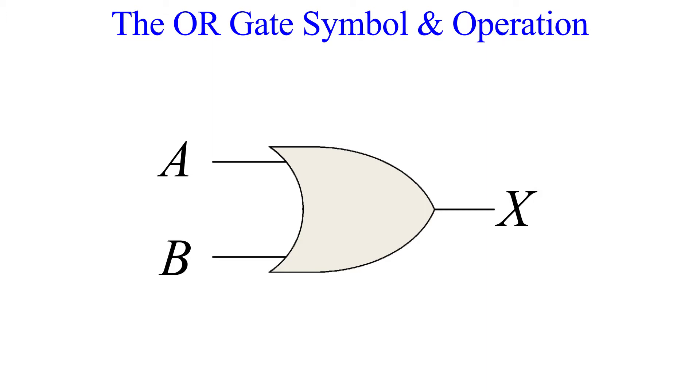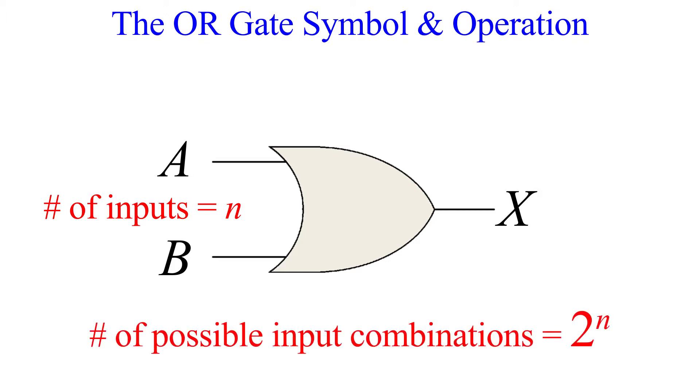Consider this a quick review if you have seen the video on the AND gate. The number of possible input combinations depends on the number of inputs. If we let the number of inputs be the variable n, then the total number of possible input combinations is 2 to the n power. So our two input gate here has four possible input combinations.